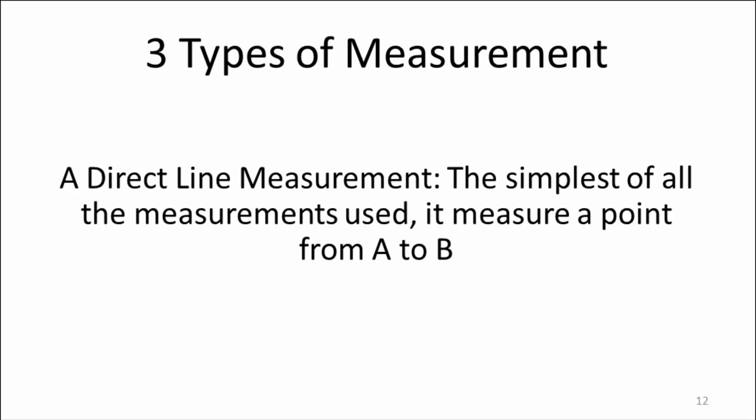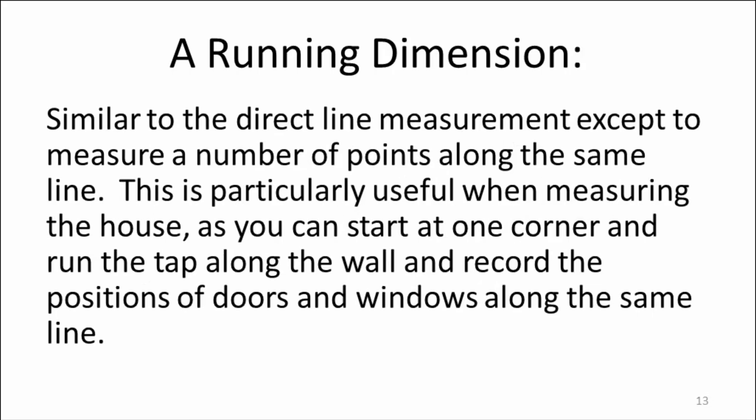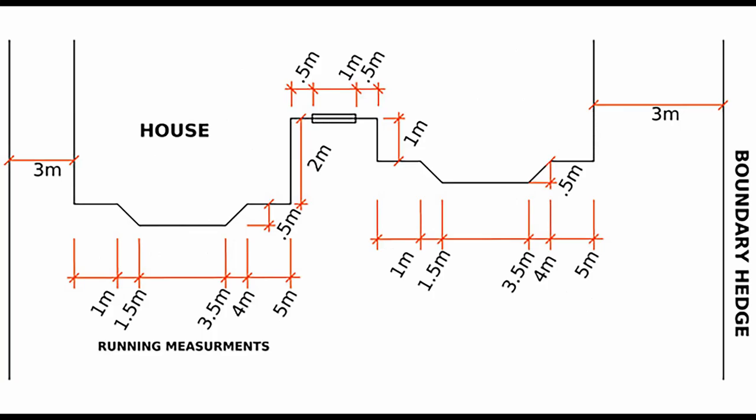A running dimension is similar to a direct line measurement, except you measure a number of points along the same line. This is particularly useful when measuring the house, as you can start at one corner and run the tape along the wall, and record the positions of all the doors and windows along the same line.